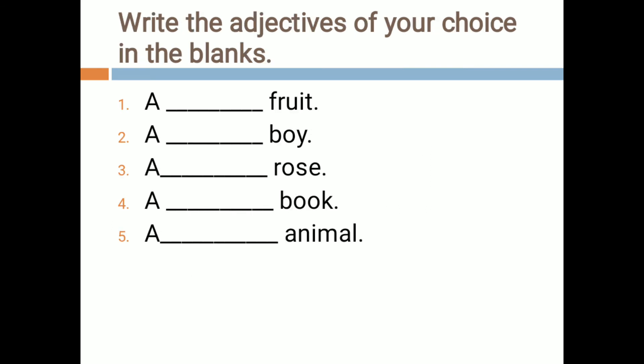Now some more examples are given — blanks are given and we have to write an adjective of our choice. We can write any adjective that defines size, shape, color, or number. For example: 'a dash fruit.' Fruit may be sweet or sour, big or small. So we will write 'a sweet fruit' here, as we know all fruits are sweet.